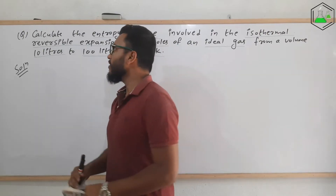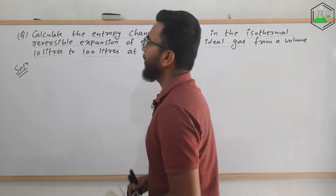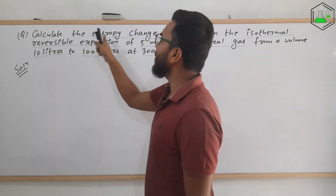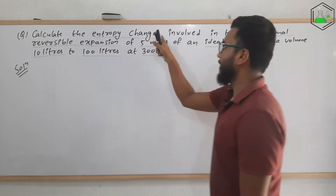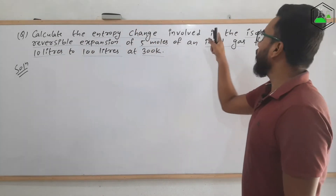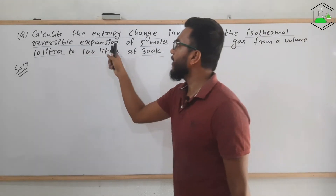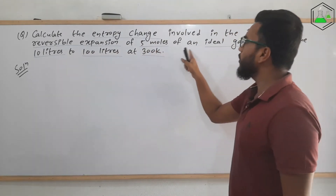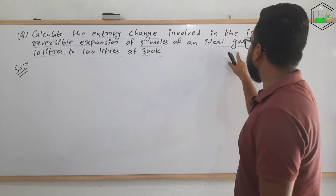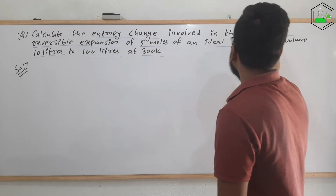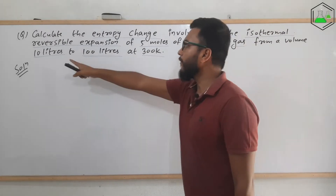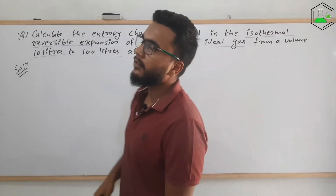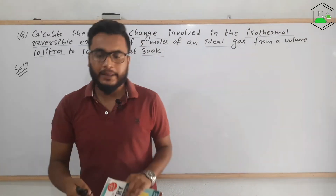I have written the question of the first numerical problem: calculate the entropy change involved in the isothermal reversible expansion of 5 moles of an ideal gas from a volume of 10 liters to 100 liters at 300 Kelvin.